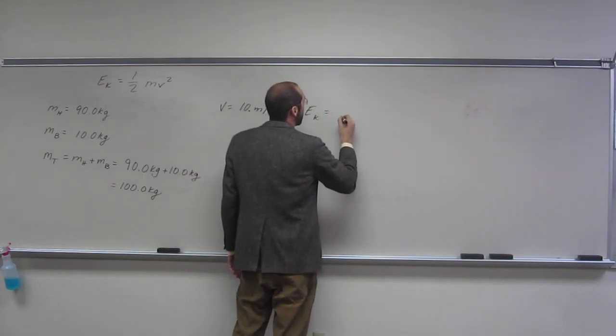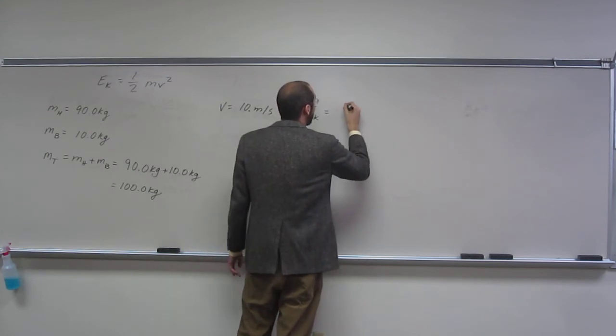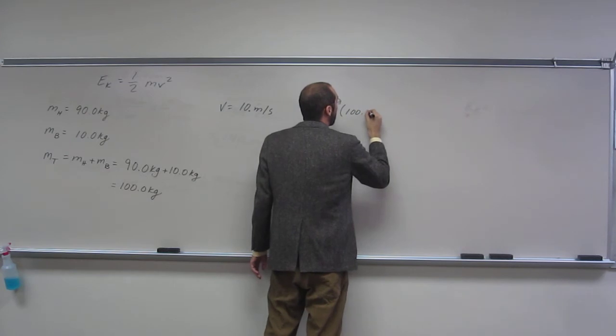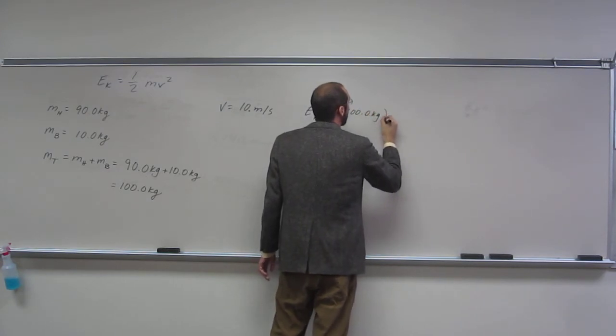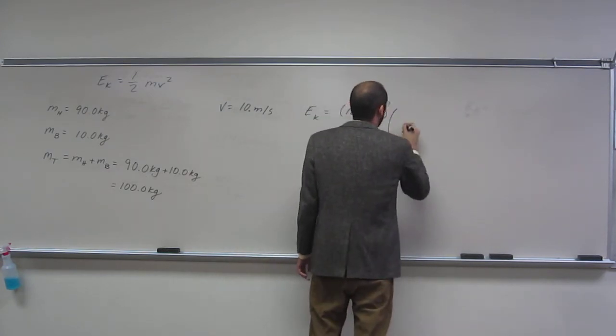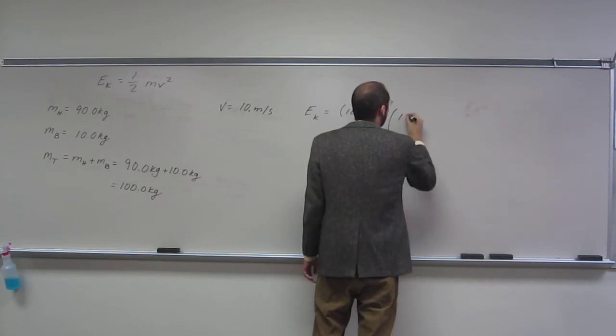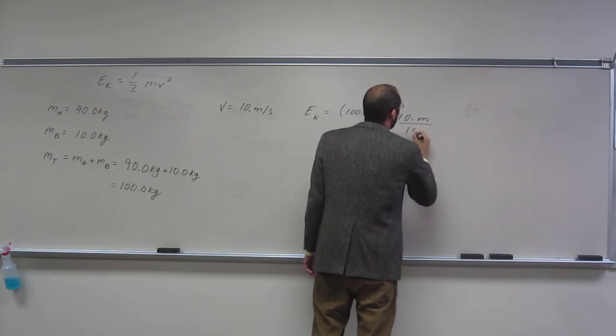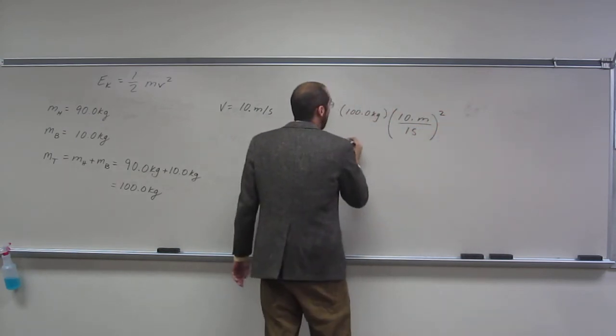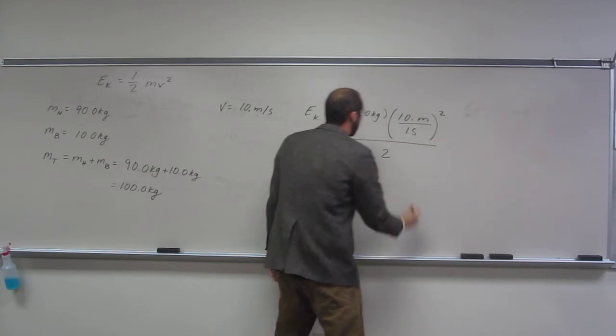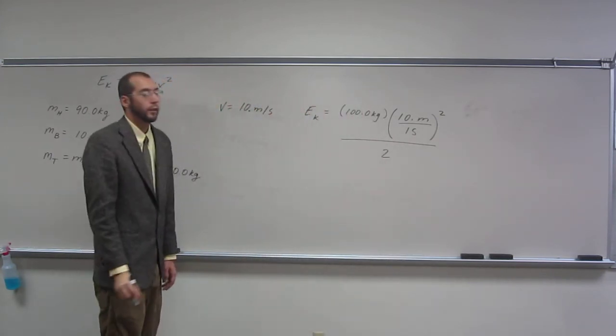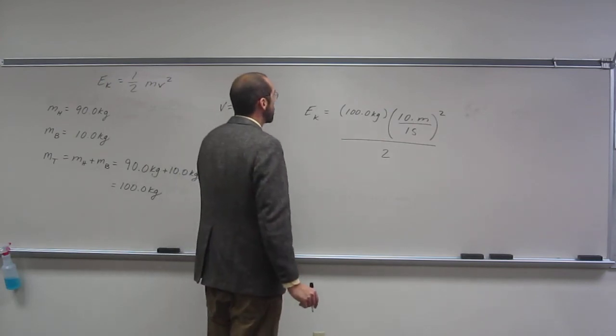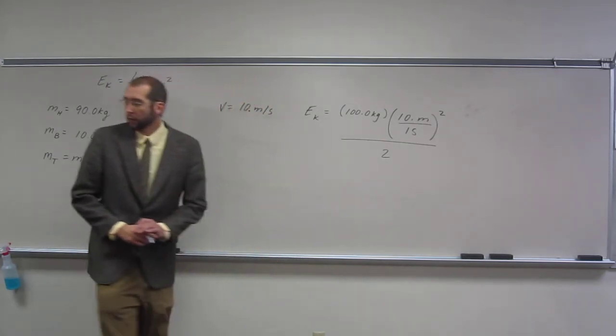So kinetic energy equals mass, which is 100.0 kilograms, times the velocity, which is 10 dot meters divided by one second squared. Divide that whole thing by two. So that's another way of writing my formula.